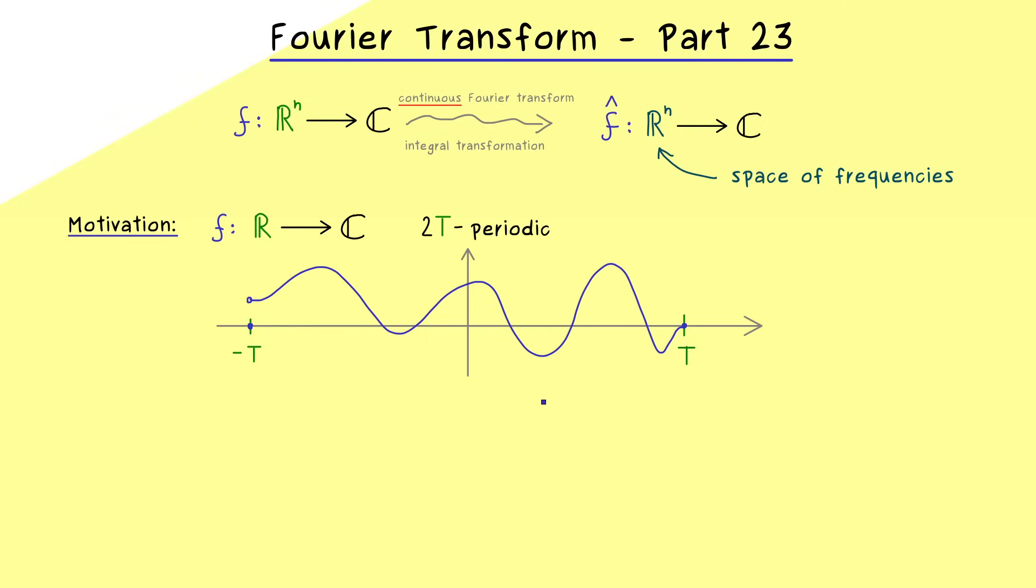Therefore the first idea to lose this periodicity requirement could be to increase this capital T more and more. However it turns out that this does not change anything because we can always scale the function down to 2π periodic functions. We just have to scale in the x direction by 2π over 2T. In other words we don't lose any information because we just shrink the whole graph to a smaller domain. So the conclusion is that we can just use all our Fourier series methods to this new function on the bottom.